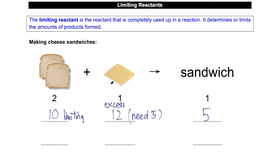You might think that the limiting reagent is always the smallest number — that's not true. Let me show you another example. If I have 14 slices of bread and 12 slices of cheese, can you tell me what is the limiting reagent? Some of you might jump to the conclusion that 12 is the smallest number so it's the limiting reactant — that is not correct.